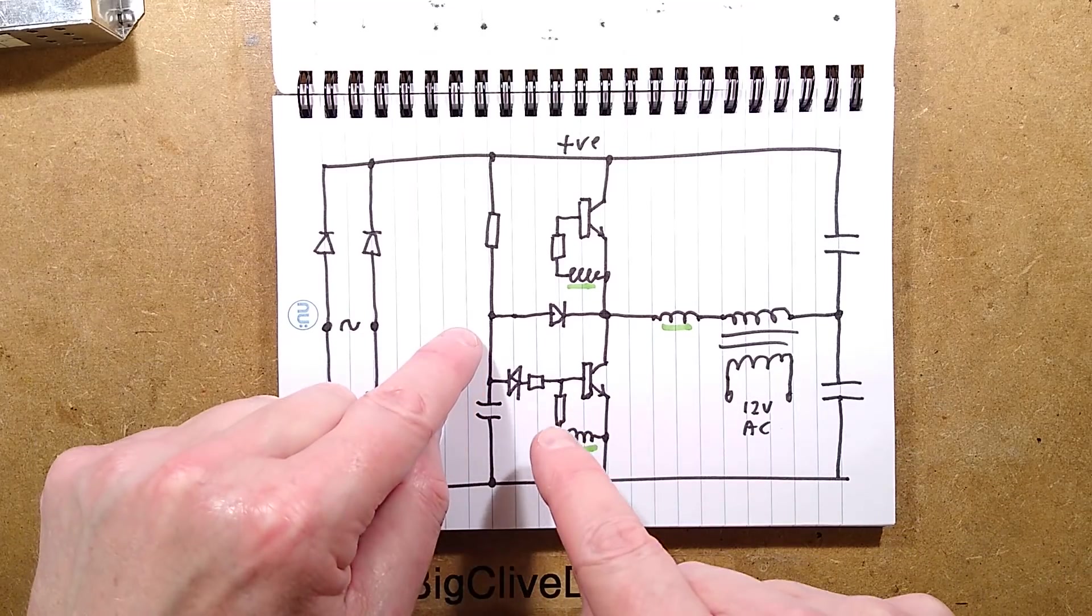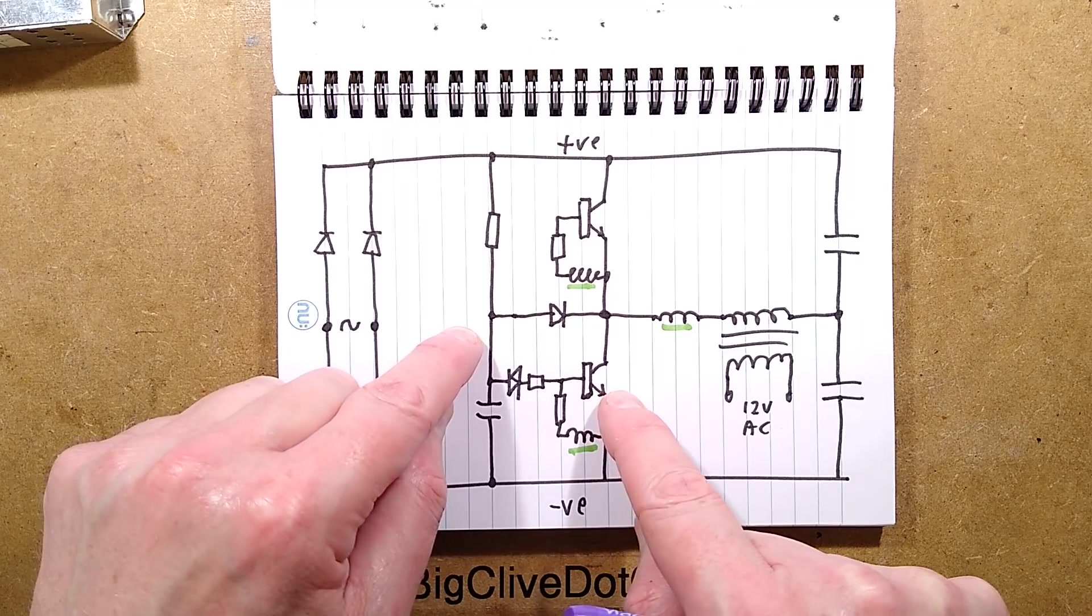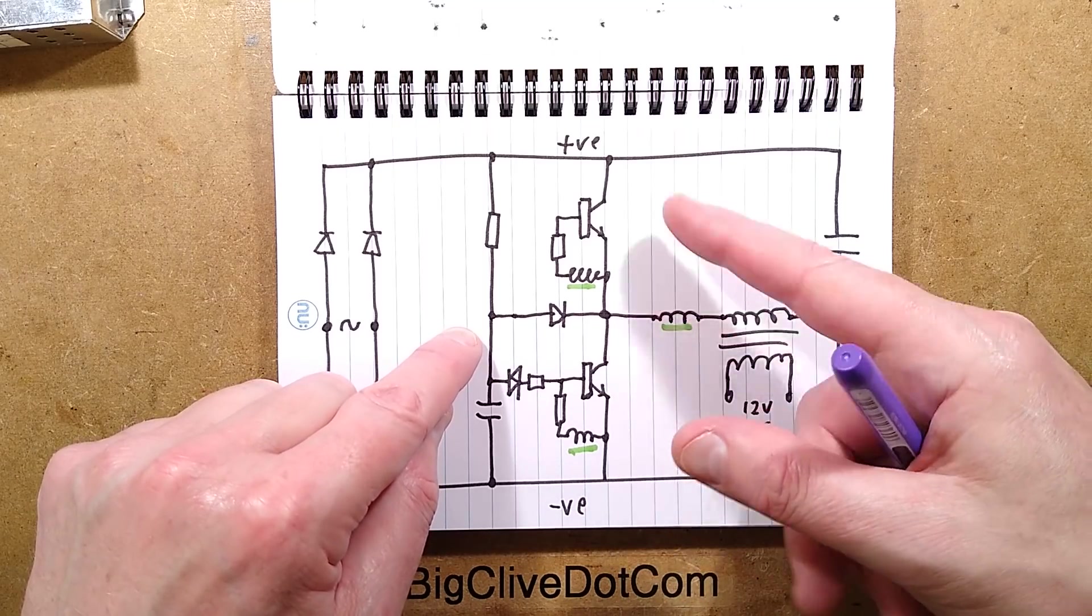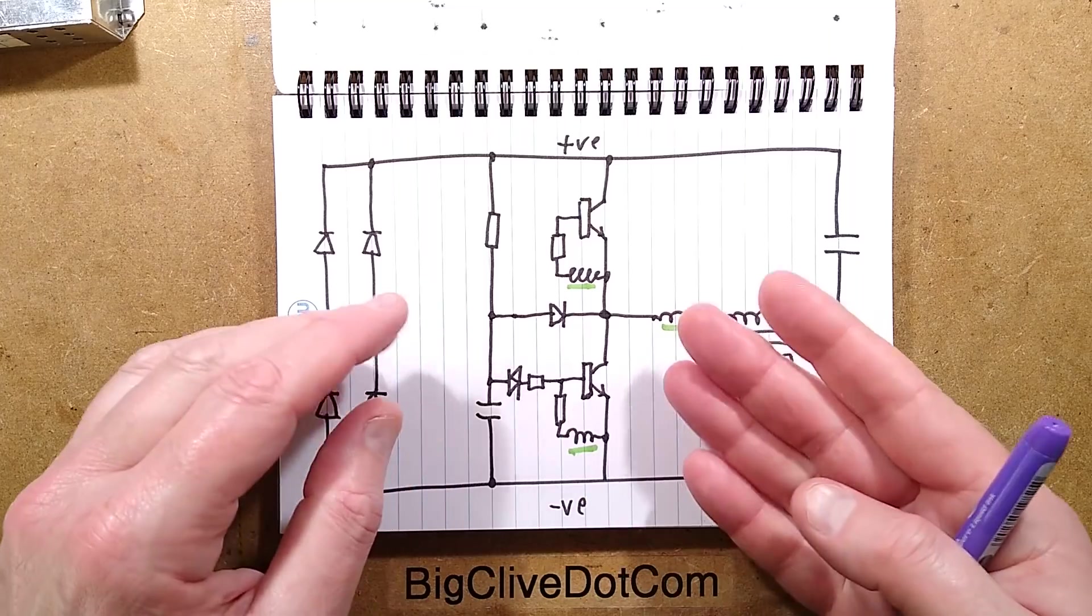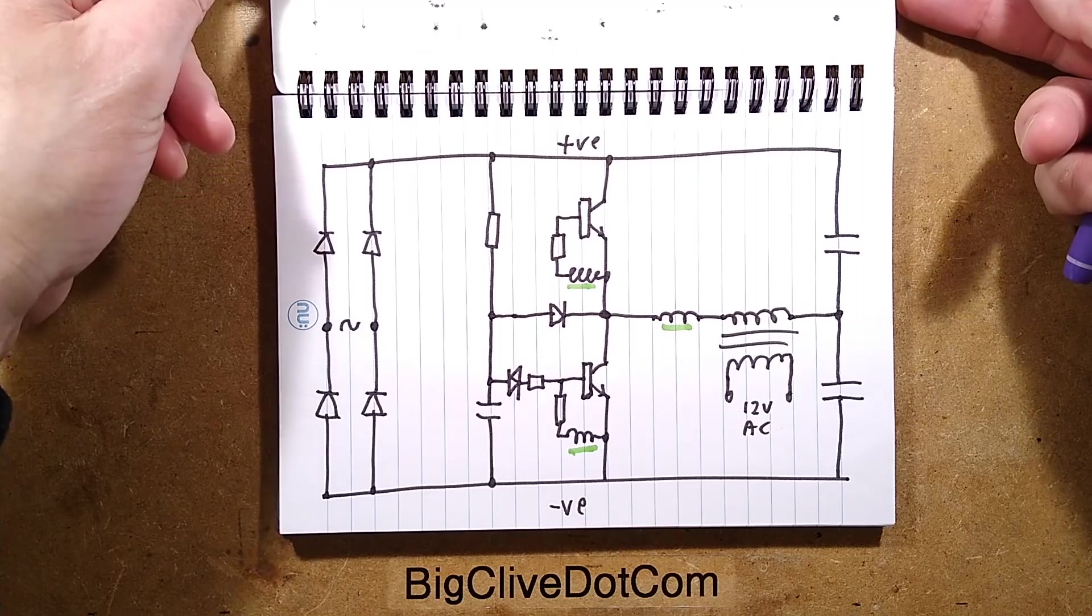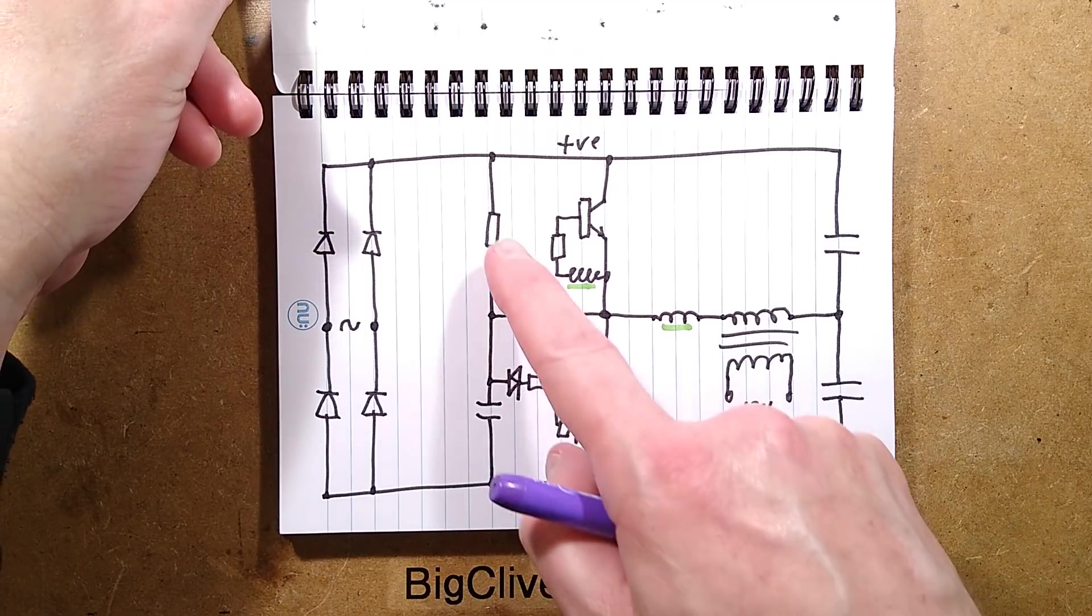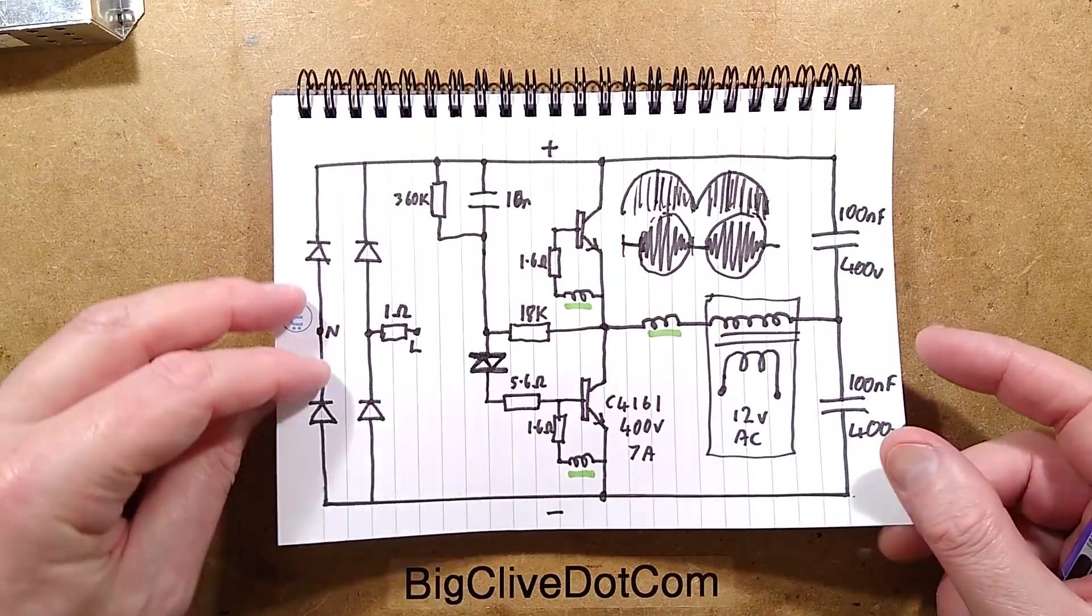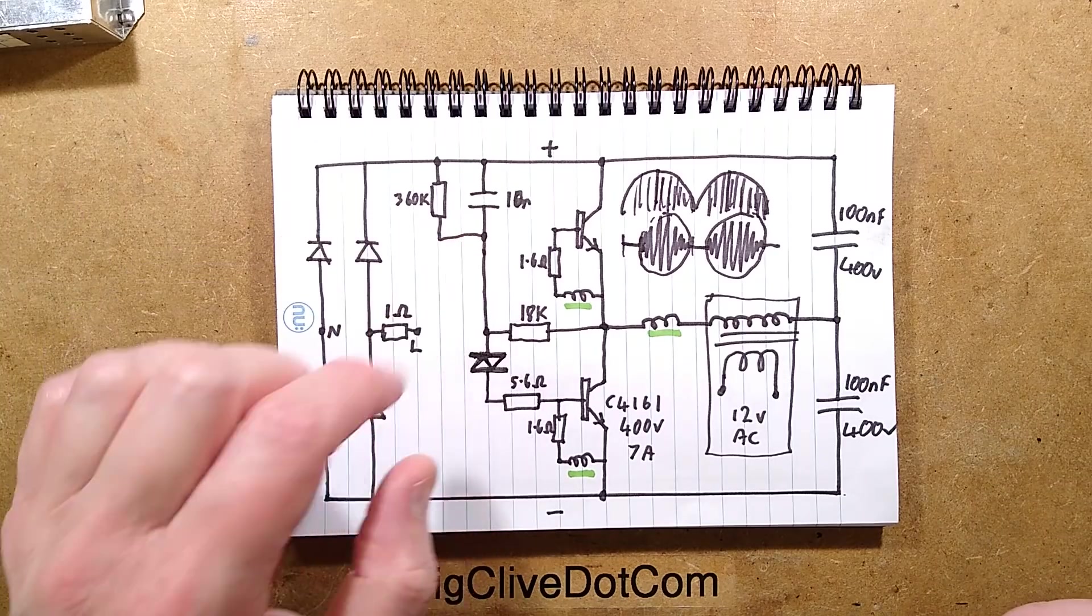But as soon as it does turn on, this diode here shunts that capacitor every time this turns on, and that means this circuitry cannot re-trigger that transistor while the oscillator is actually running. Because if it did there's a risk that both transistors would be turned on at once and it would be a disaster.